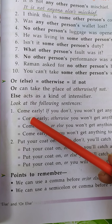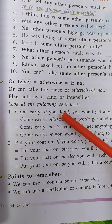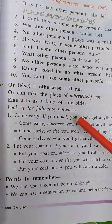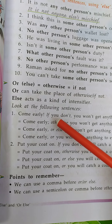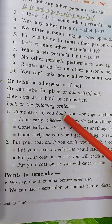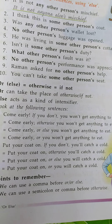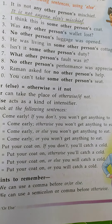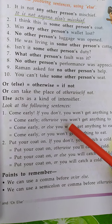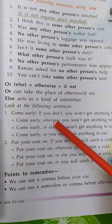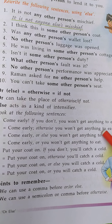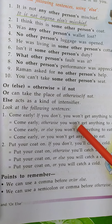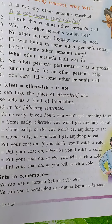Number one. Come early. If you don't, you won't get anything to eat. जल्दी आना — अगर आप जल्दी नहीं आओगे तो आपको खाने के लिए कुछ नहीं मिलेगा। इस sentence को हम ऐसे लिख सकते हैं: Come early, or else you won't get anything to eat.